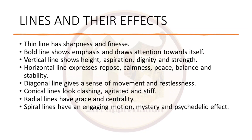Elaborating more on lines and their effects: thin line has sharpness and finesse. When we look at a painting, we can see the flow and confidence in the line and say that the artist is an expert. Bold line shows emphasis and draws attention towards itself, just like bold words in a document. Vertical line stands for height, aspiration, dignity and strength. Horizontal line has peace and balance. Diagonal line is restless. Conical lines look agitated and stiff. Radial lines, just like a circle, have grace and centrality. Spiral lines have an engaging motion, mystery and psychedelic effect — they draw our attention towards the center and look hypnotizing.